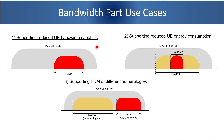The second use case is supporting reduced UE energy consumption. Although a user equipment may support a larger bandwidth, at times when it is not using much data — say only internet browsing is being done — it may use a bandwidth part with less channel bandwidth. In this example there are two BWPs, BWP1 and BWP2, where BWP2 is a subset of BWP1. When the UE does not require much data it will make BWP2 active, and when it requires a larger chunk of data to be transmitted or received it may use BWP1.